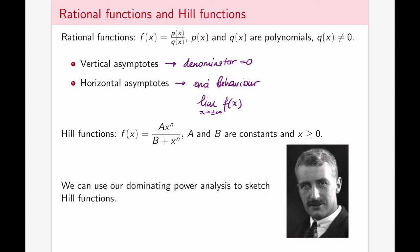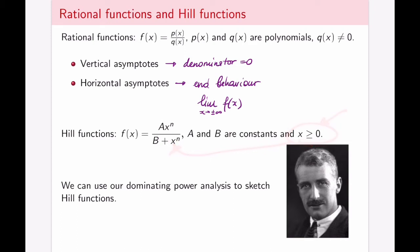Because of their applications, we will consider these functions mainly for positive values of x. They will model things like population growth, disease dynamics spread, and enzyme kinetics — things like the number of infected people, the number of animals or humans in a population, or concentrations, and therefore be positive. We can sketch this using technology, but we will use the dominating power analysis to really figure out what these functions look like.